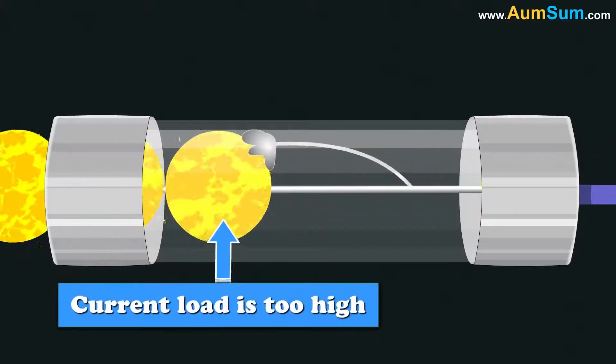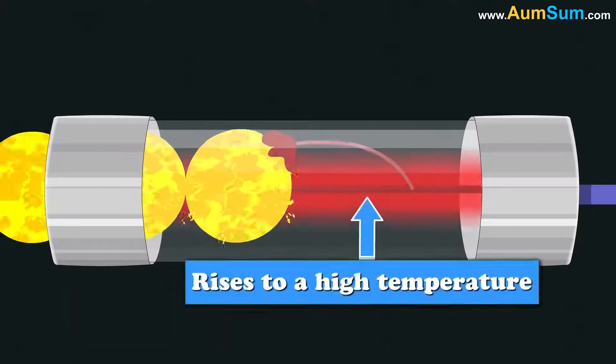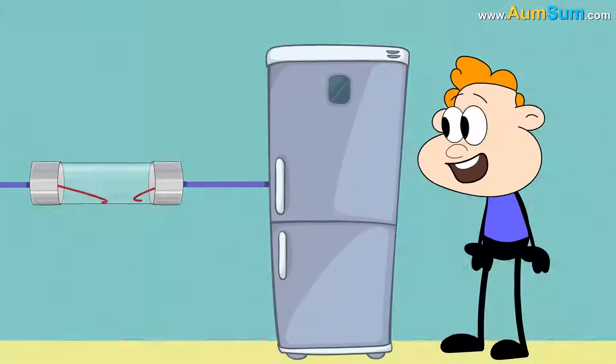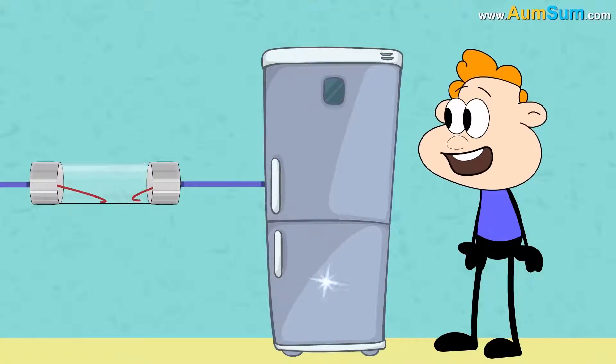But when the current load is too high, the fuse element rises to a high temperature and melts. Thus, breaking the circuit and in turn, saving the electrical appliance from damage.